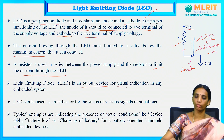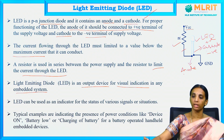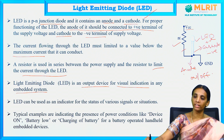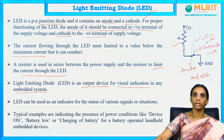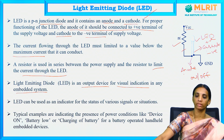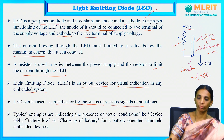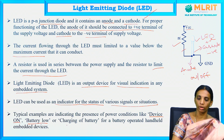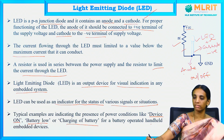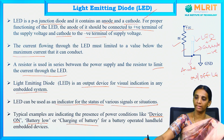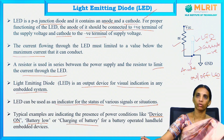The LED is an output device used for visual indication in any embedded system. LEDs are used for visual indication in power on and off conditions, or to indicate whether any application is working or not. LED can be used as an indicator for the status of various signals or situations. Examples include device on, battery low, or charging of battery — such as indicating in a remote controller whether the system is on or off, or indicating a battery low condition.